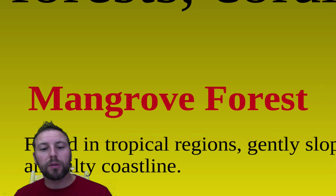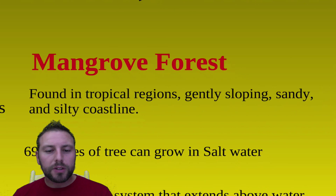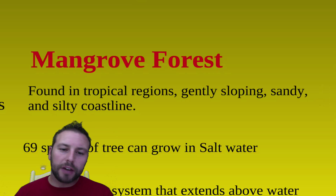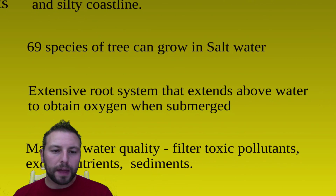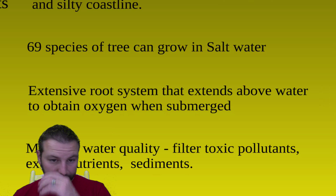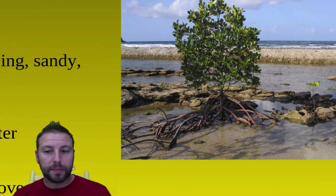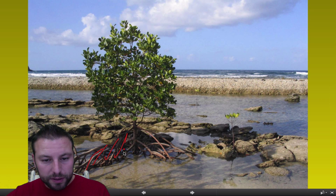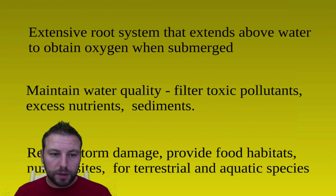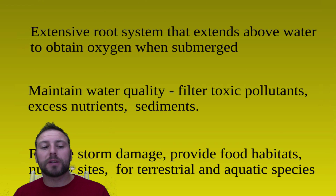Moving over, we go into our mangrove forests — pretty cool regions. These are found in tropical regions on gently sloping sandy and silty coastlines. About 70 species of tree can grow in salt water, and they have an extensive root system that extends above the water line so they can obtain oxygen when submerged and carry out any other gas exchanges that need to happen. You can see this amazing, extensive root system that stabilizes and holds the area together. Mangroves maintain water quality — they filter toxins, pollutants, excess nutrients, and sediments.